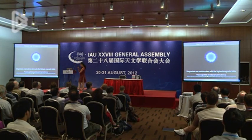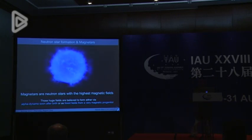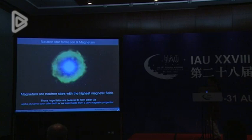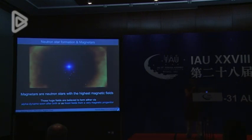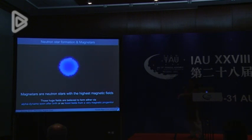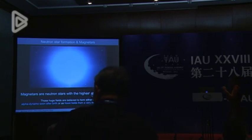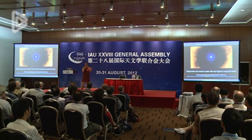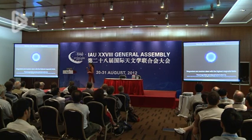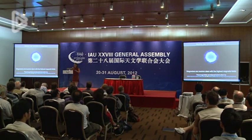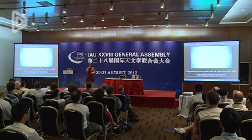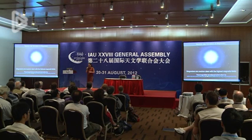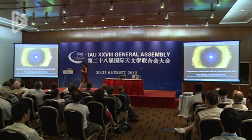Very briefly, how magnetars are formed with respect to a normal pulsar — this is a largely debated question, but I'll make a very long story short. There are two main ideas. In one case, it's through an alpha dynamo effect: when the supernova explodes, if the proto-neutron star in the core is spun up very fast, a dynamo effect due to convection might bring a normal magnetic field of 10 to the 12 Gauss up to 10 to the 15 Gauss. Another proposed mechanism is through fossil fields — magnetars may come from very massive stars that already have a very high magnetic field of a few kilo-Gauss, and we know there are many such magnetic stars in the galaxy.